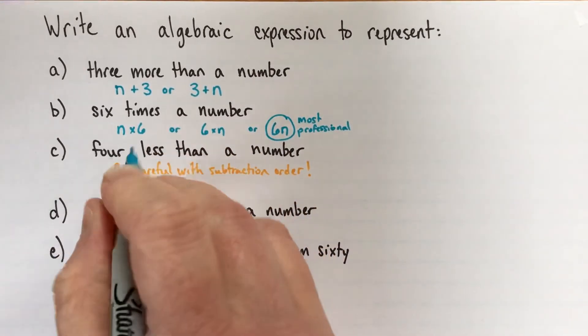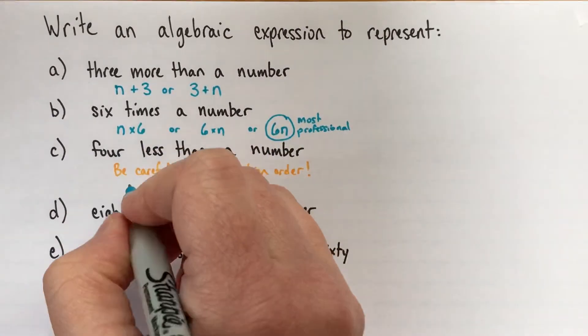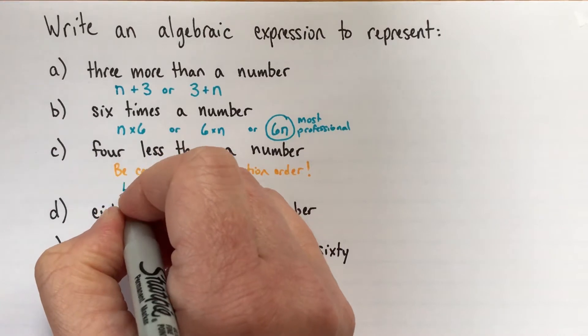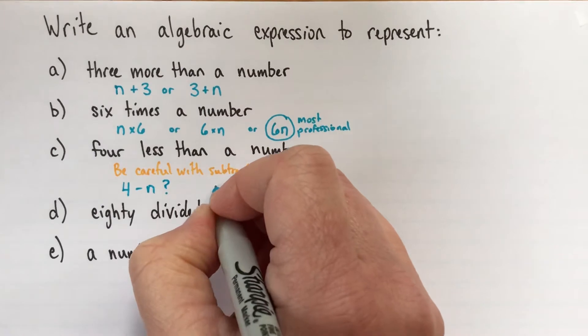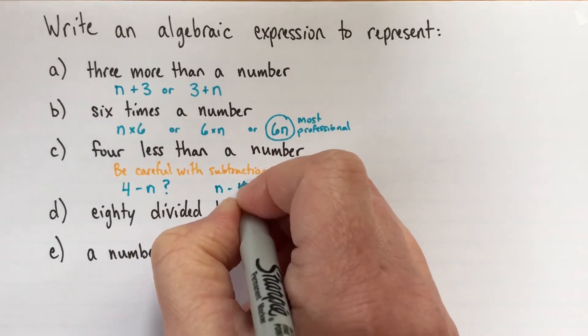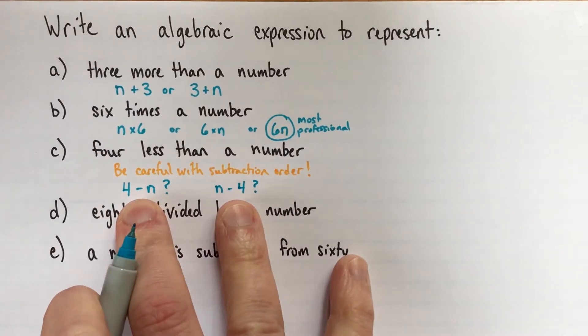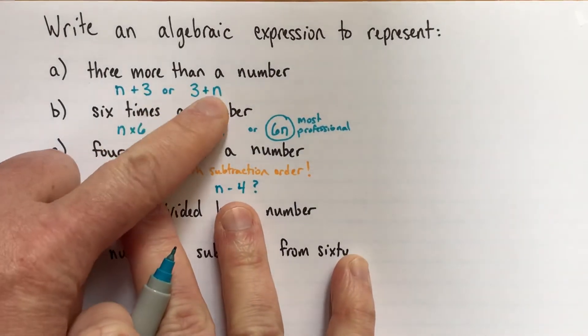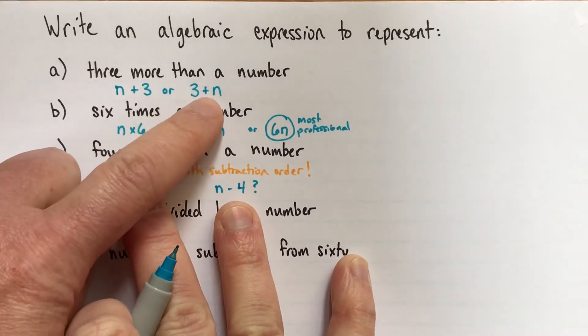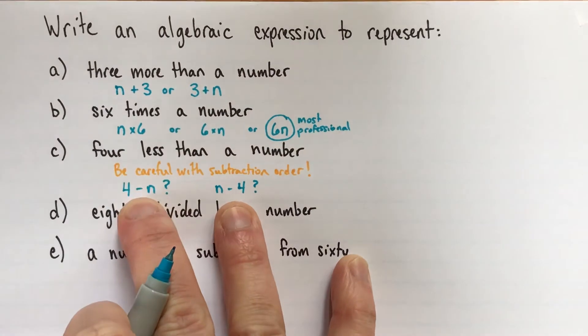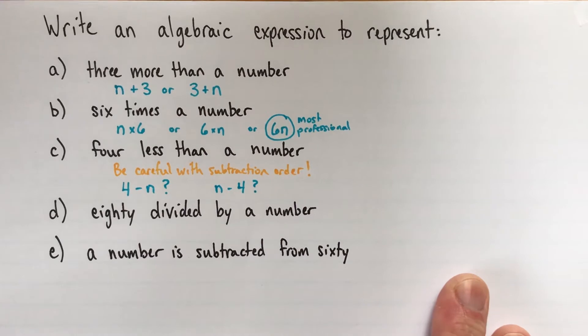So four less than a number. I'm going to write down two answers here. Now, in this case, they're not both right. One of them is right, one is wrong. So I'll put question marks. The question is, is this? I think most people, if they say less than, they think, oh, that's probably going to be subtraction. Four less than a number. The question is, is it four subtract n or is it n subtract four? One is right and one is wrong. These do not give us the same value. With addition, you can change—two plus three is the same as three plus two or n plus three is the same as three plus n, but it's not the case with subtraction. If you change the order, it changes the value. So only one of these is correct.